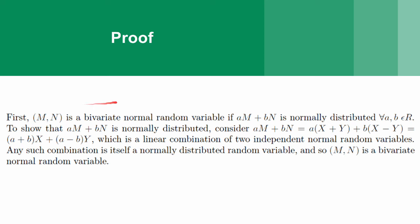We've shown that am plus bn is normally distributed for all a, b in the real numbers. So, m, n is a bivariate normal random variable.